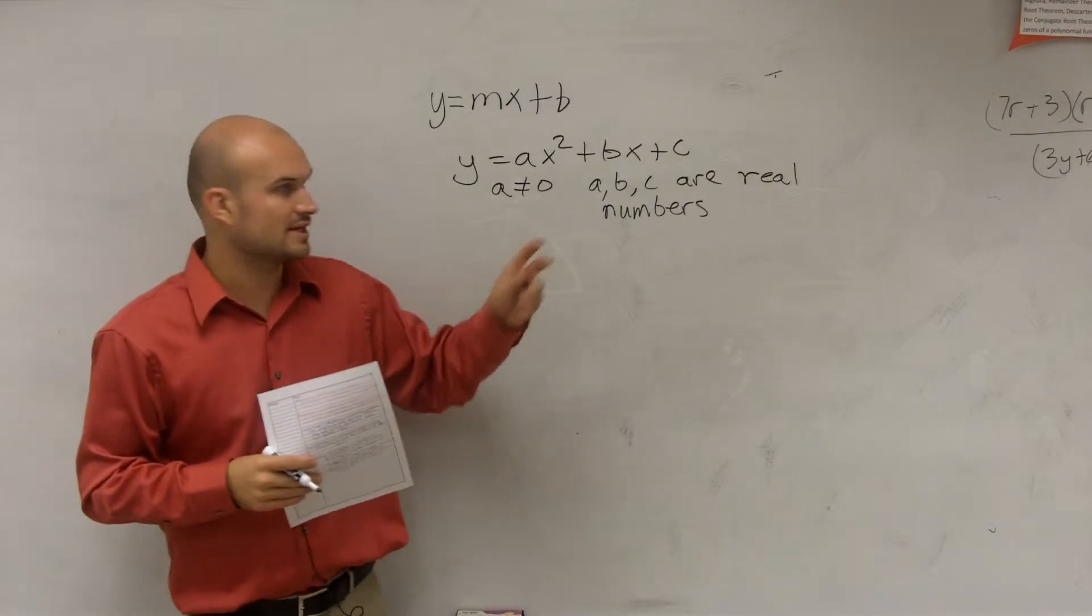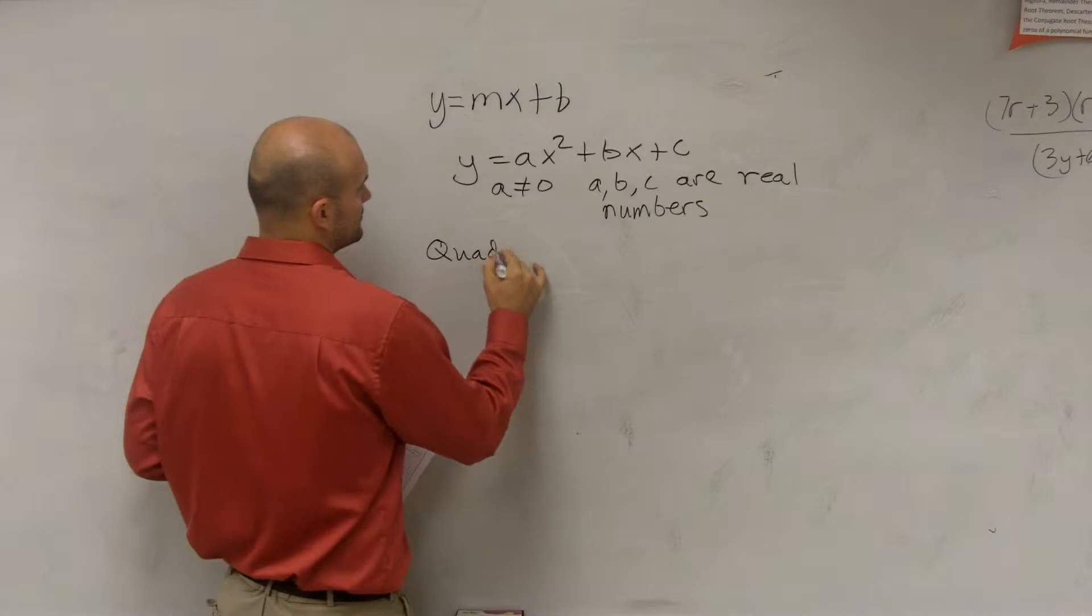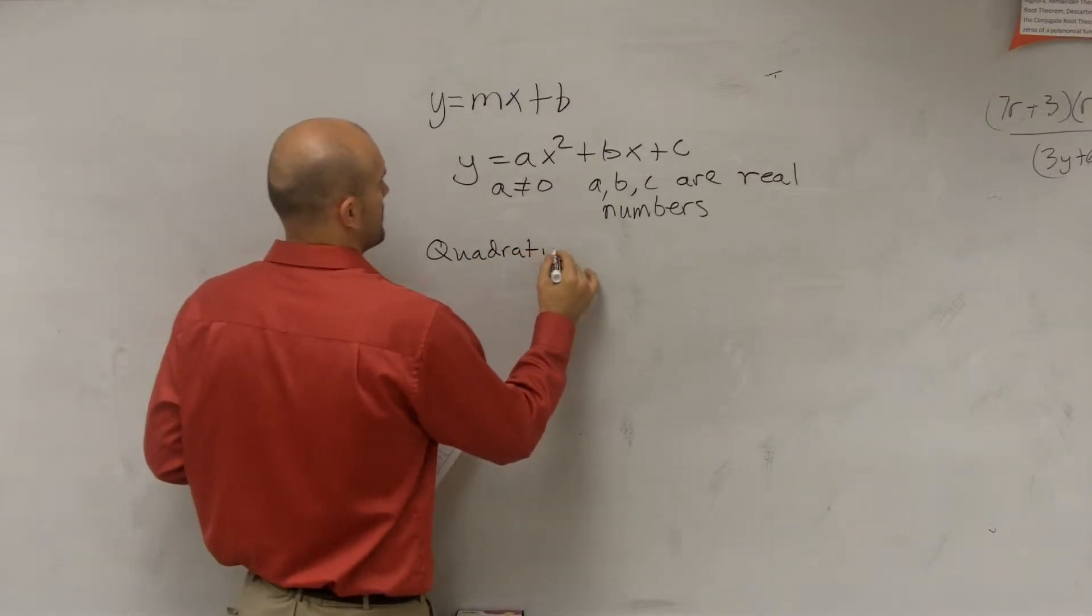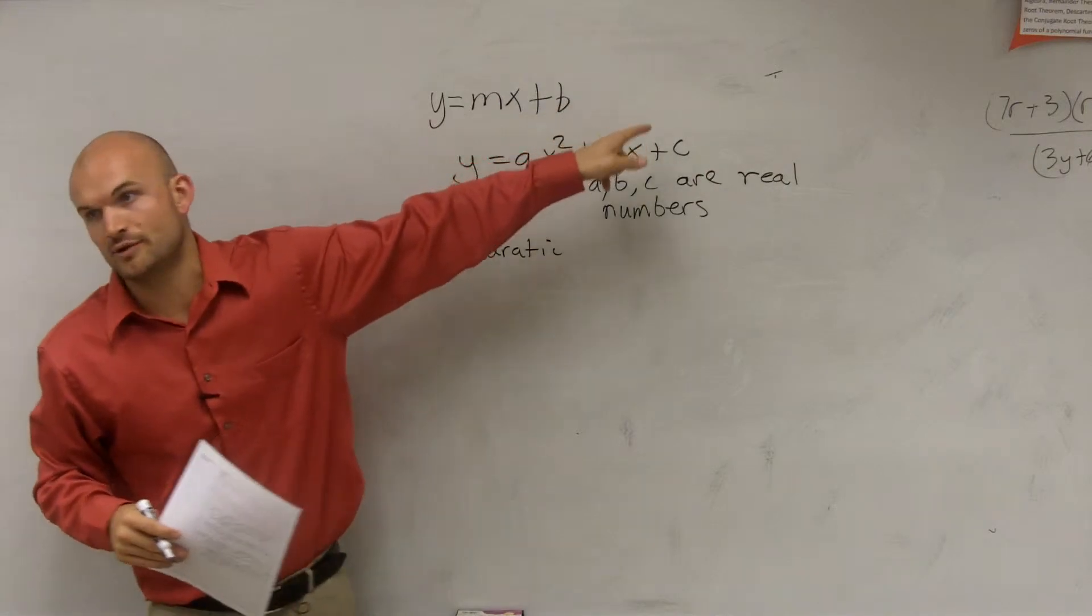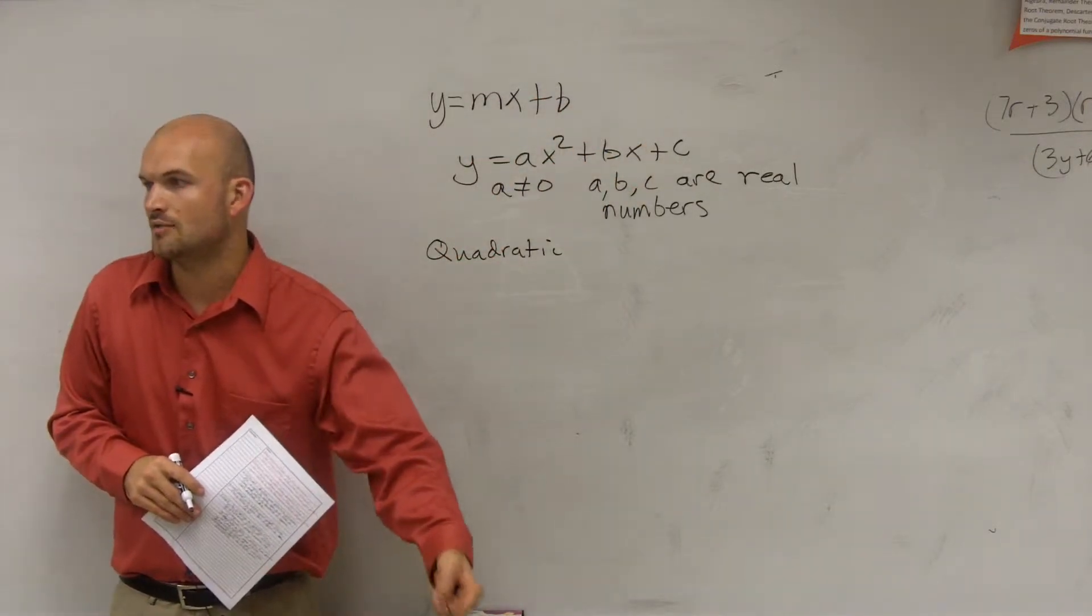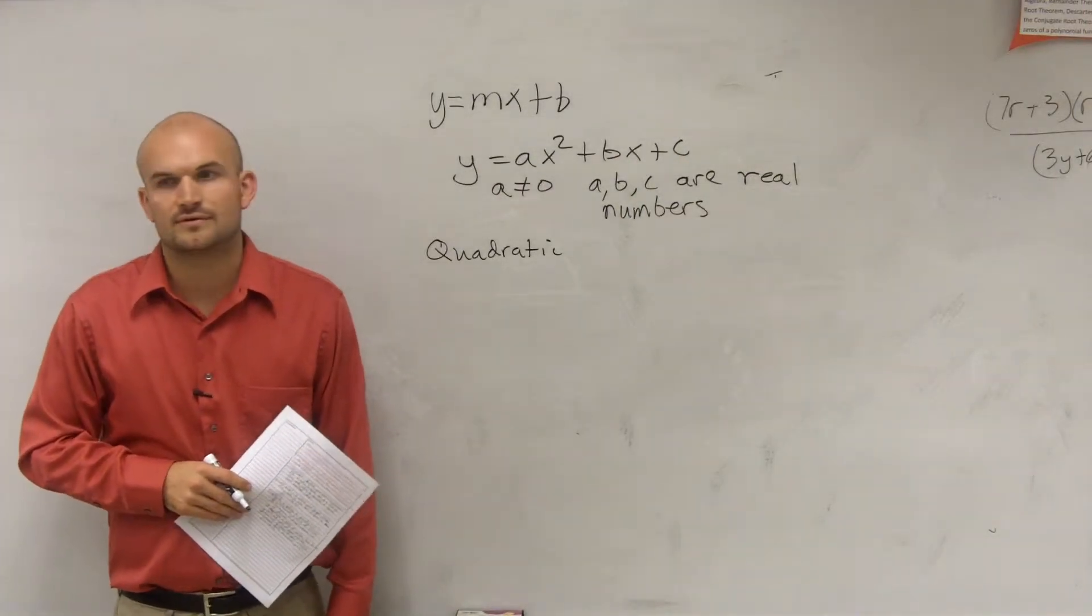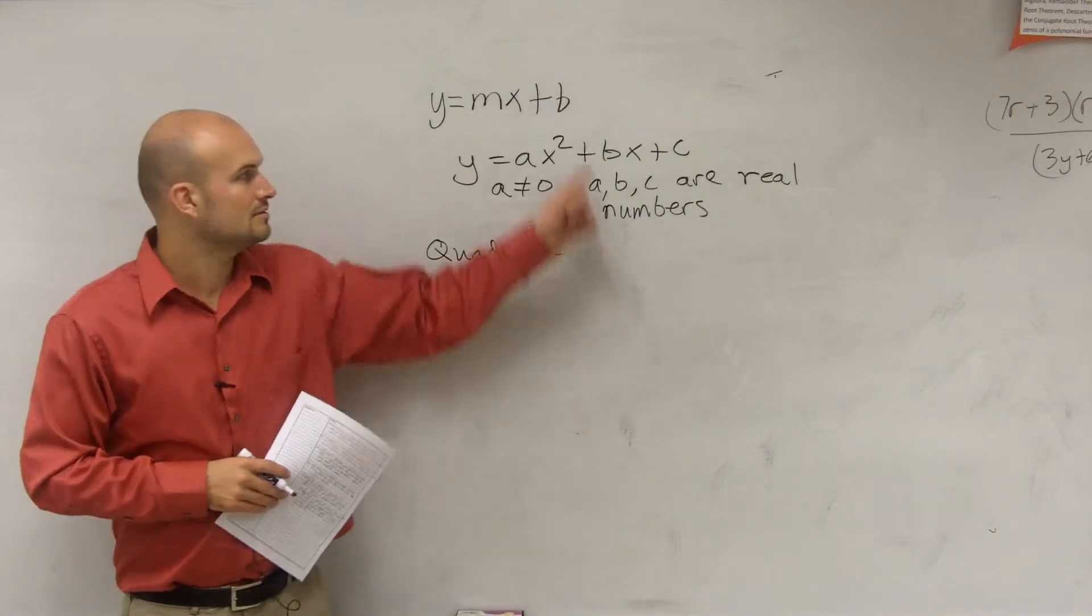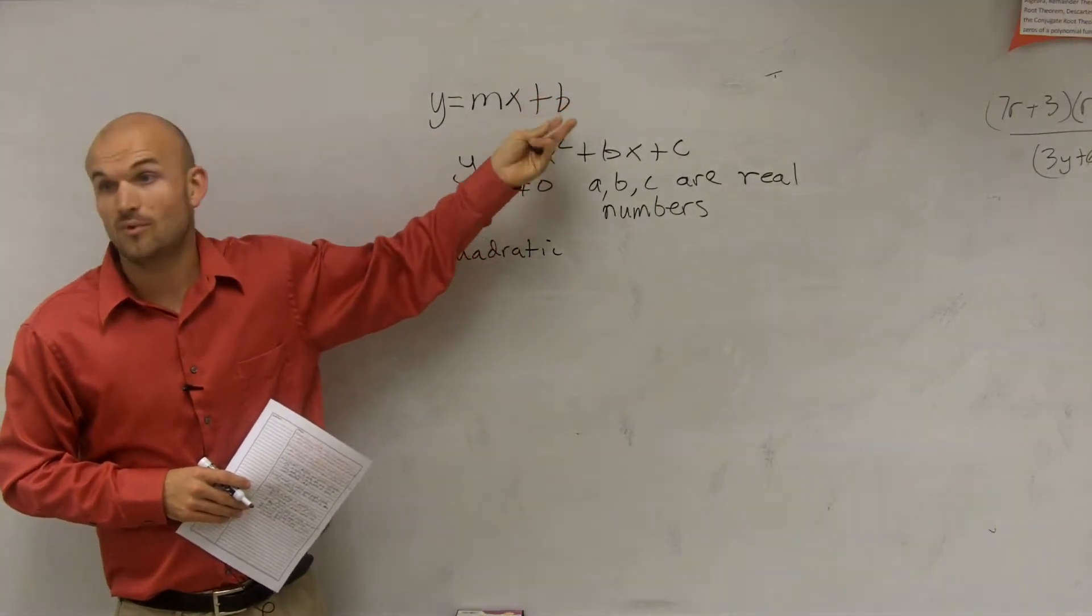So it's important for you guys to understand a couple things. A quadratic equation, all it is, is if you guys look at when we were looking at a linear equation, what was the highest degree that I have for it to be a line? What's the exponent of my x? It's 1, right?